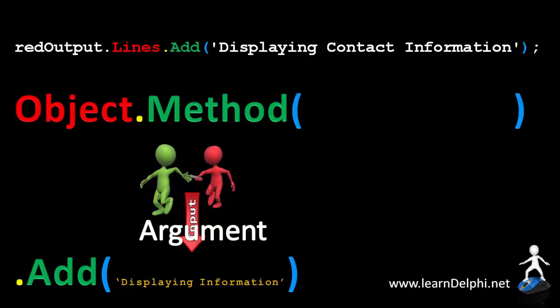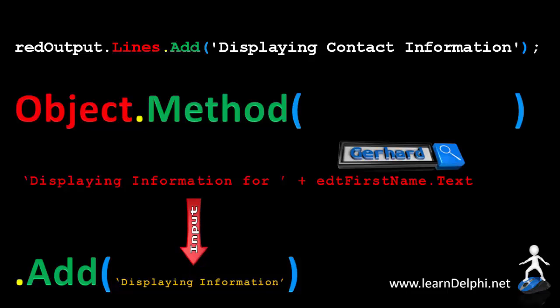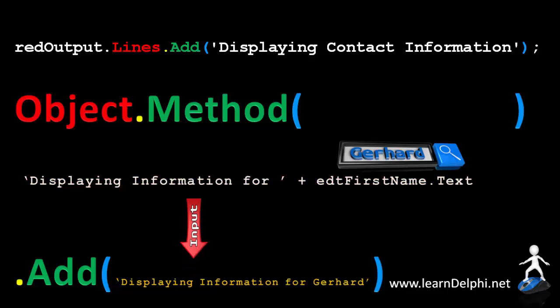The string argument that we pass may also be an expression. An example of that is when we concatenate or join another value to the string. Here, I am concatenating the text in an edit called edtFirstName to the string. If the text in the edit is my name, Delphi will join my name to the rest of the phrase to read 'displaying information for Gerard'. That whole concatenated string will then be passed as an argument to the input parameter of the add method.